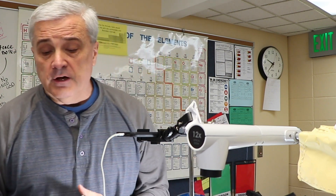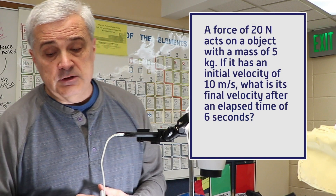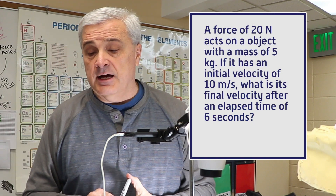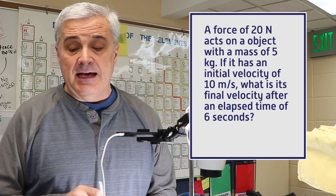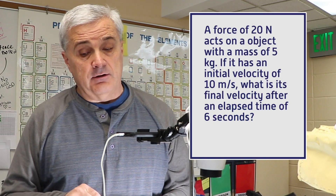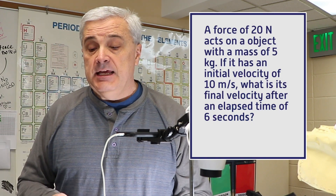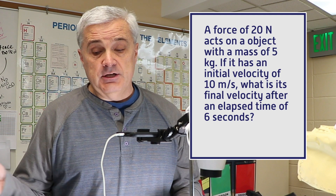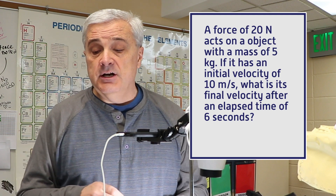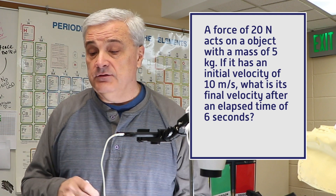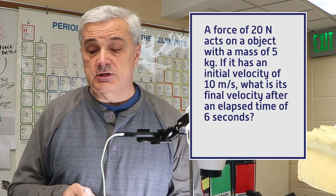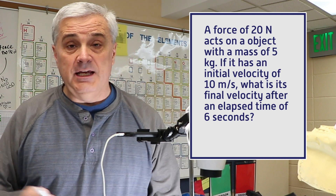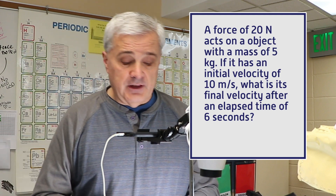In this video, a force of 20 newtons acts on an object with a mass of 5 kilograms. If the object has an initial velocity of 10 meters per second, what is the final velocity?